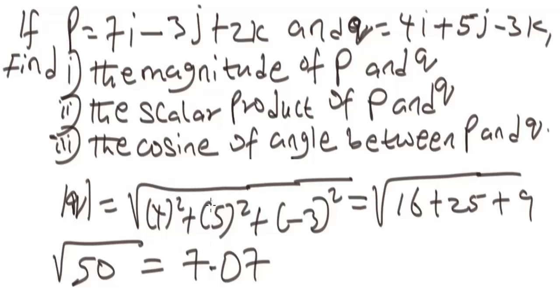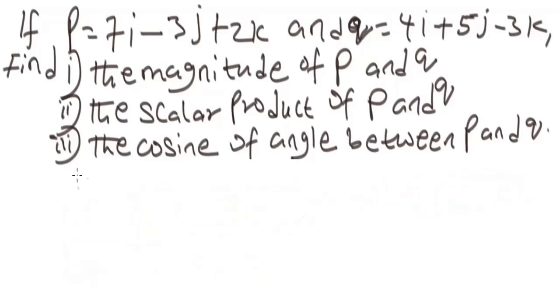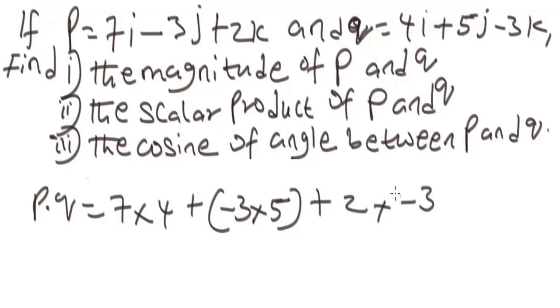Now let's solve for the scalar product. The scalar dot product will be the sum of the product of the similar vectors. The dot product between P and Q will be 7 times 4 plus minus 3 times 5, plus 2 times minus 3.